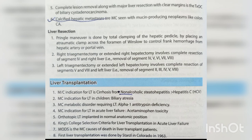Liver transplantation: The most common indication is cirrhosis from non-alcoholic steatohepatitis, greater than hepatitis C. The most common indication in children is biliary atresia. The most common metabolic disorder requiring liver transplantation is alpha-1 antitrypsin deficiency. The most common indication in acute liver failure is acetaminophen toxicity. Orthotopic liver transplantation is implanted in the normal anatomic position. King's College criteria are used for selection in acute liver failure. MODS is the most common cause of death in liver transplant patients. The first liver transplantation was done by Starzl in Colorado in 1963.